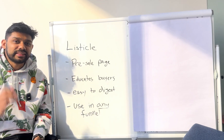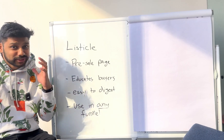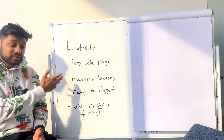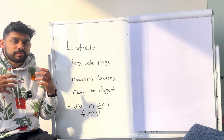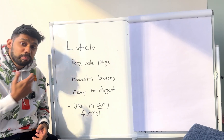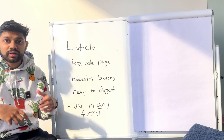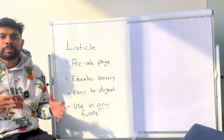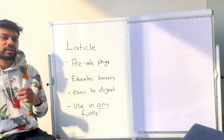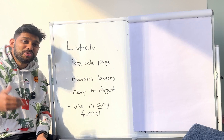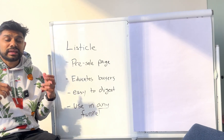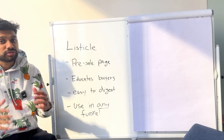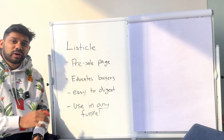Before we get started, I'm going to call out that we're going to be making a listicle today. The reason why is that it's the lowest of the low-hanging fruit when it comes to optimizing your e-commerce funnel. It is a pre-sale page, which means that it comes before the purchase. It educates buyers and gets them excited about your brand and your product. It's easy to digest — think of this as three reasons why, the old-school BuzzFeed format, but specifically around your product or offer. It can be plugged into any funnel: retention, new customer acquisition, email, or ads. The listicle is the most versatile type of page, and that's why we're going to be building one today.